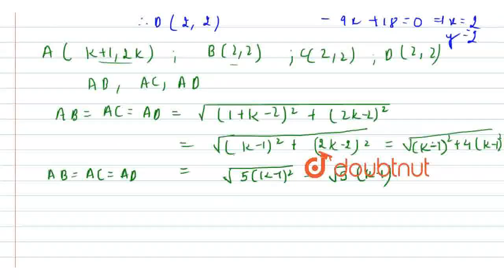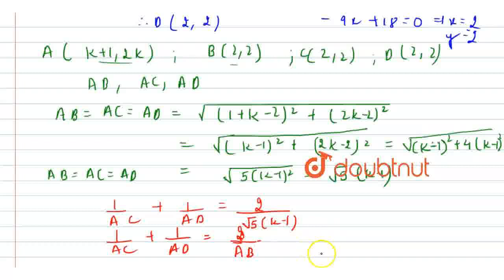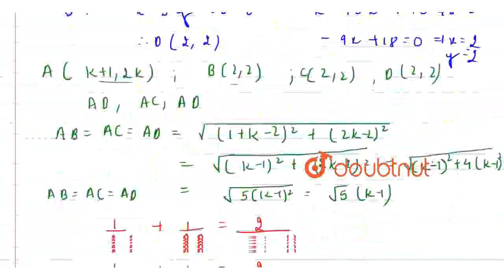Now we need to confirm the format of the series. We can see that 1/AC + 1/AD = 2/√5(k-1), which equals 2/AB. Therefore, 1/AC + 1/AD = 2/AB, which confirms that AB, AC, AD are in harmonic progression, since harmonic progression is a sequence formed by taking the reciprocals of an arithmetic progression. We have successfully proven that they are in HP.